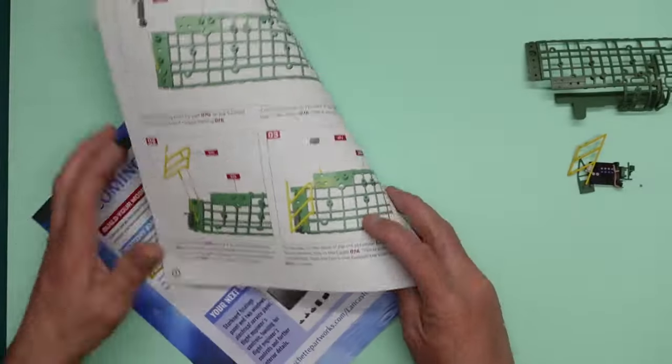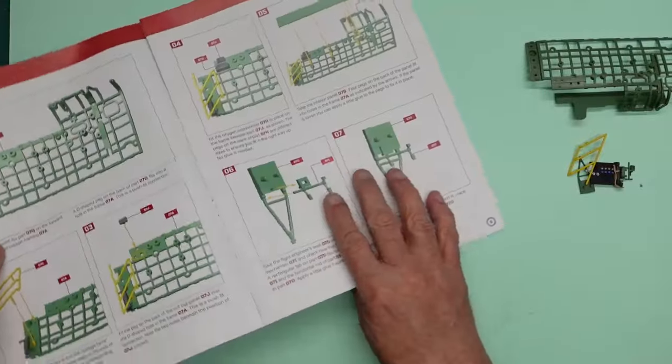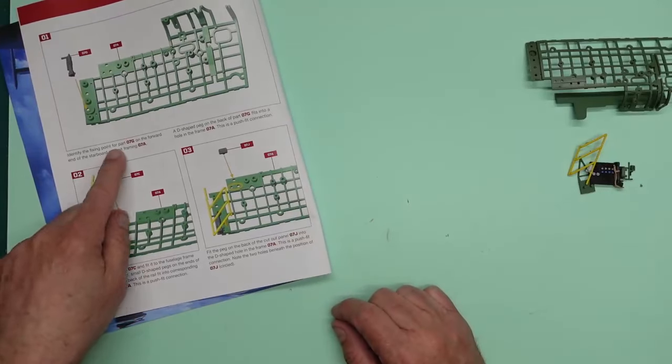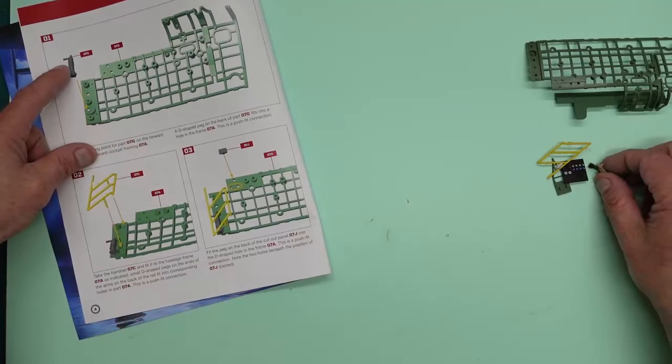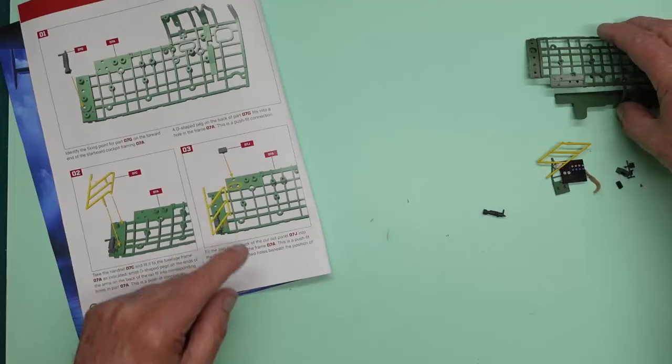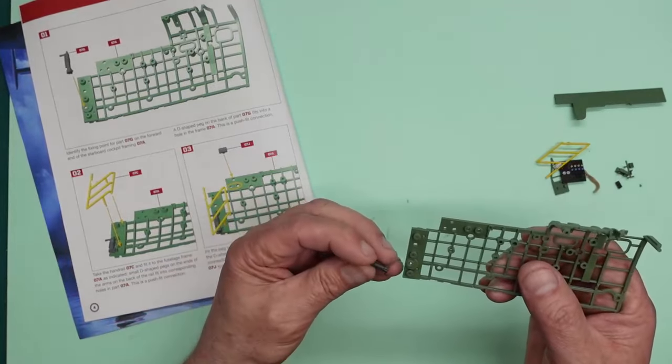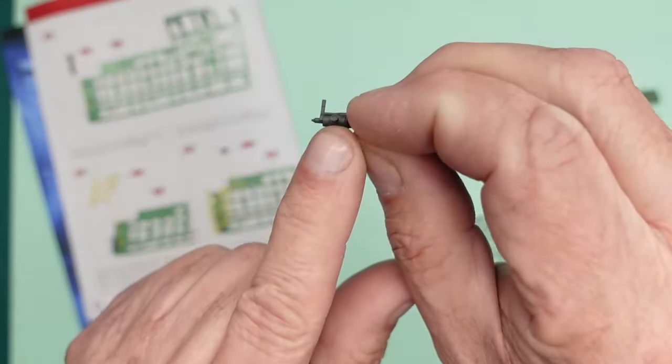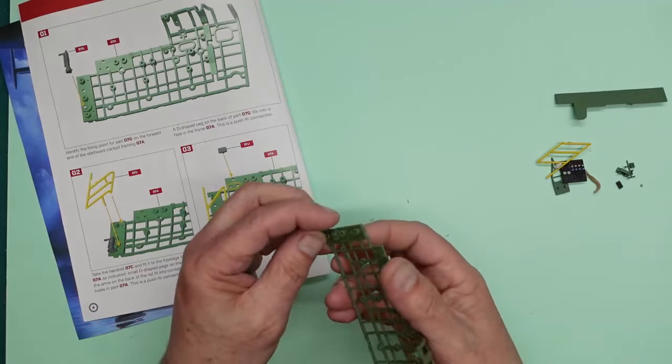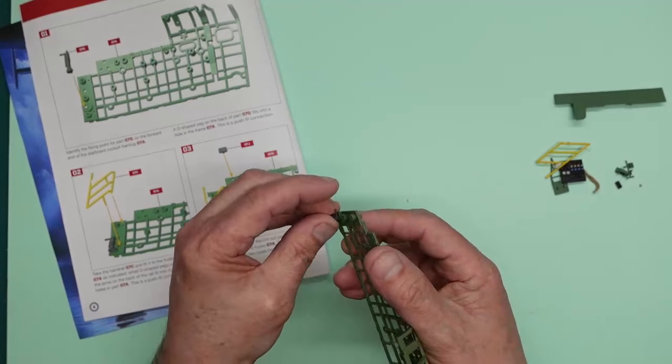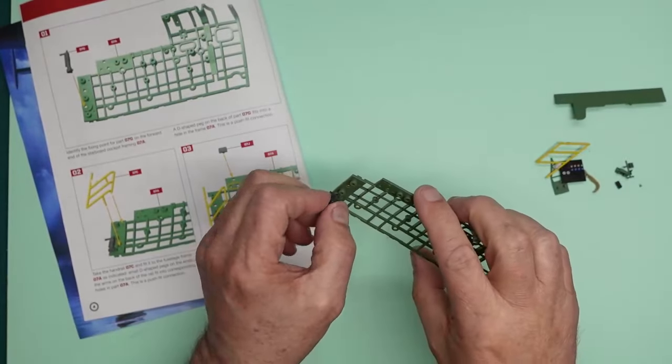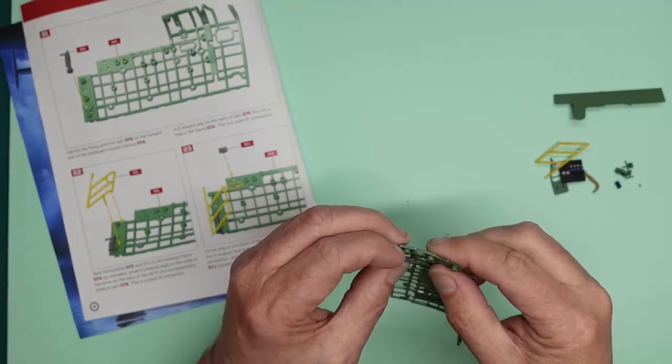Step one is to identify the fixing point for 07G. I don't like having a magazine in the shop when I'm filming because it messes up all the white balance. Identify the fixing point for 07G, which is the recuperator. In the forward end of the starboard framing, the D-shaped peg on the back of 07G fits into a hole. This is a push-fit connection. So we're going to take this here. Here's our recuperator. There is our big D-shaped pin on there, you can see, and that is going to go into that hole there. Yeah, that's going to go into that hole there and push down. In fact, I'm going to put the light back on bright. So we can see that it's gone in there now. Now that's pushed in there, but it doesn't want to stay in there. So I'm going to grab some superglue.